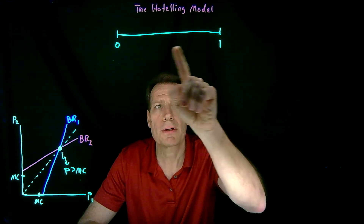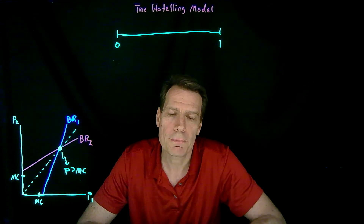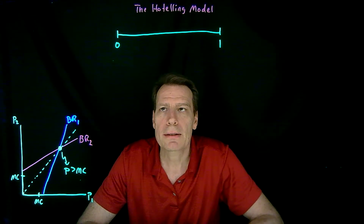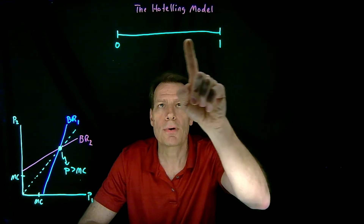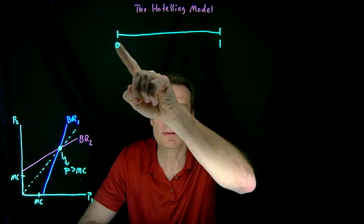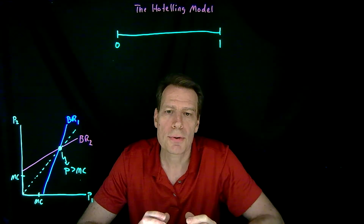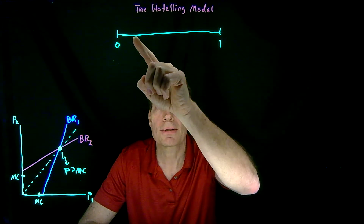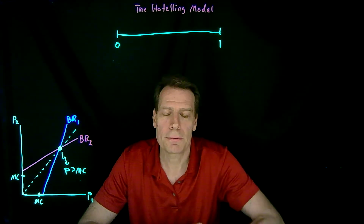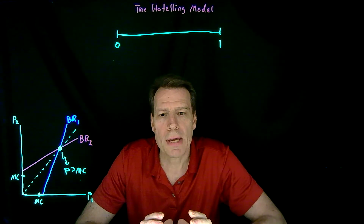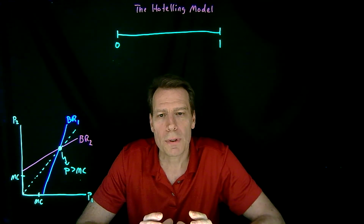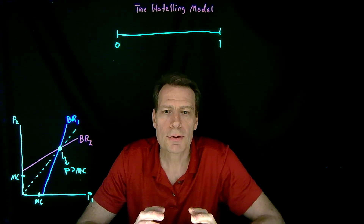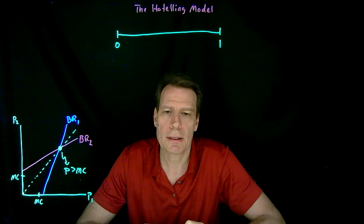You know that consumers have different ideal points over how much sugar they want in their soft drink — some will have ideal points over here, some over here. To make this as simple as possible, let's assume that the consumer ideal points are uniformly distributed across this interval, so there's the same number of consumers with an ideal point here as with an ideal point here.